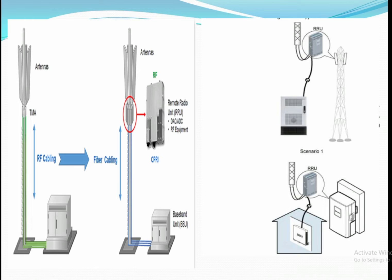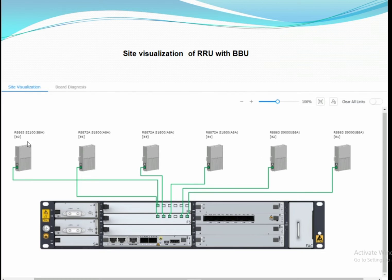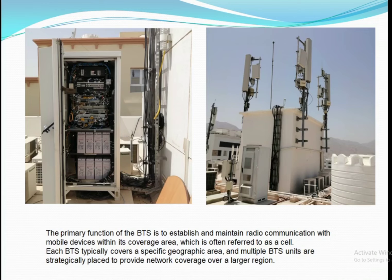Look at this — the antenna, the RRU, and the BBU are three interconnected parts. The baseband unit provides connectivity to the RRU via fiber optic cable, and from the RRU, a jumper wire goes into the antenna, enabling the antenna to radiate signals so mobile users can access services like SMS, MMS, and data.